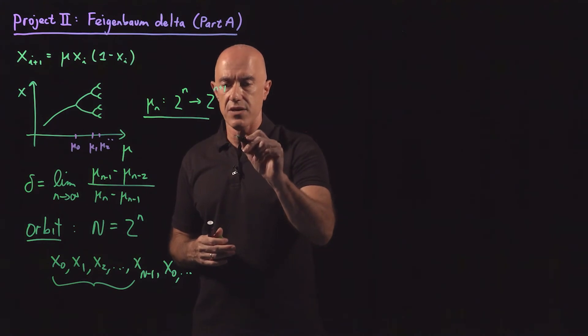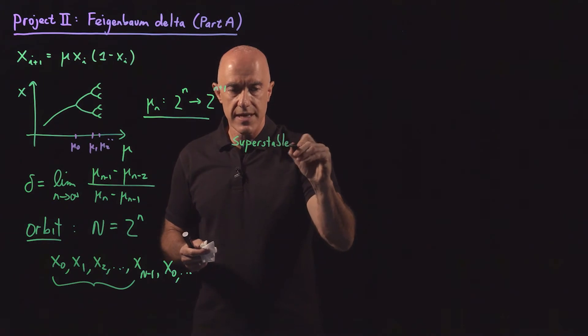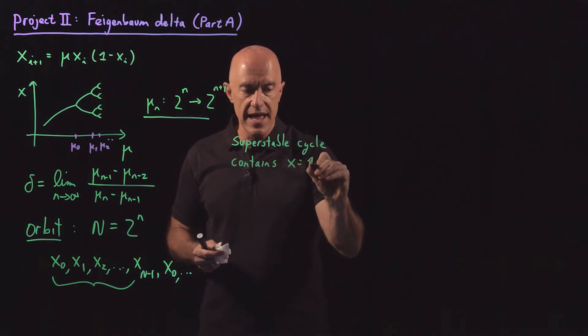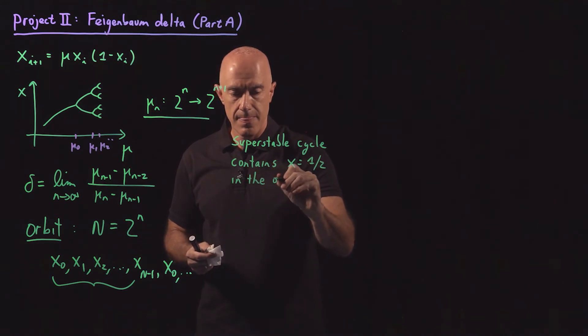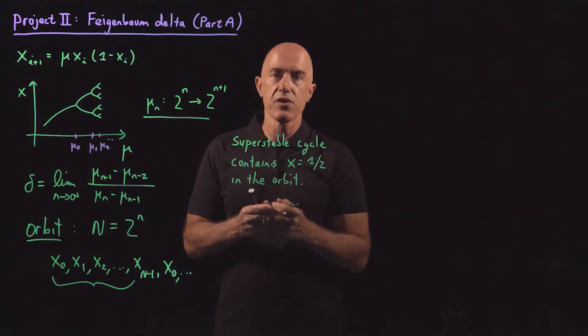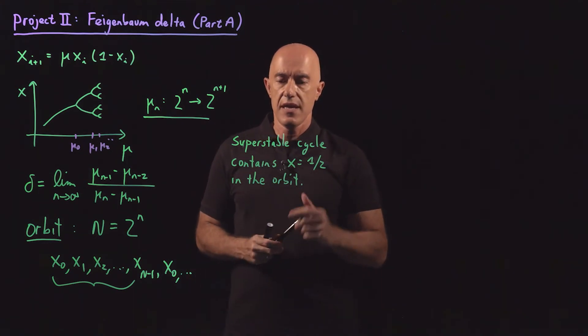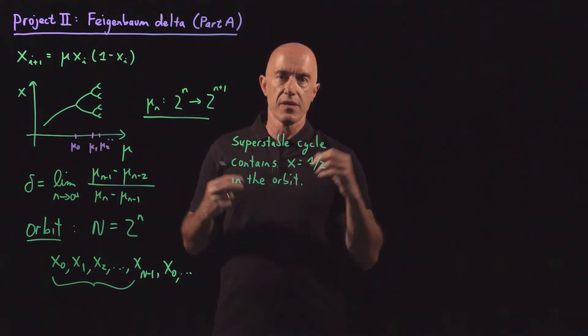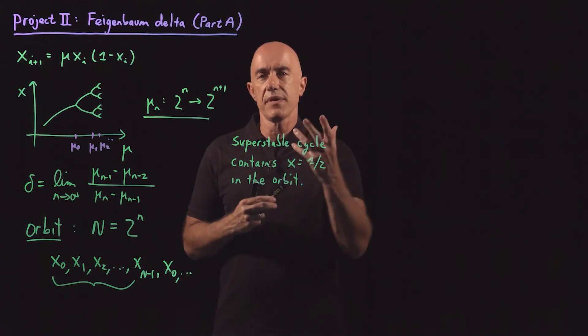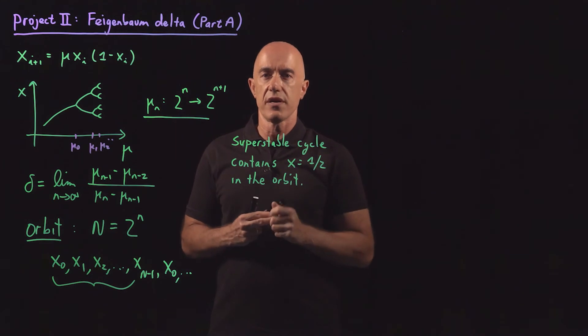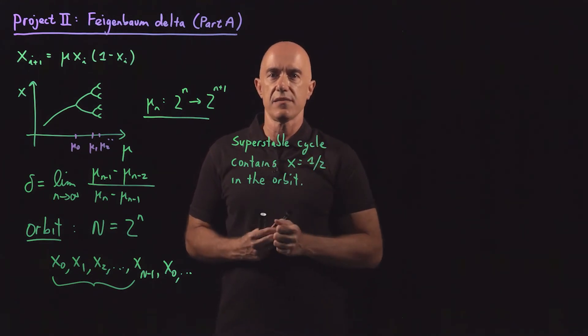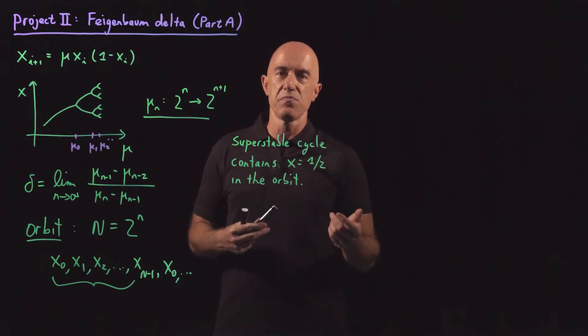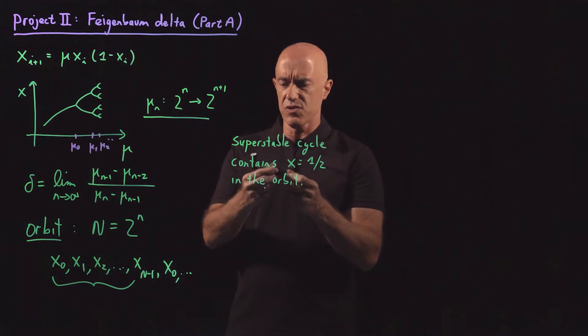So the super stable cycle contains x equals one half in the orbit. So there's a nice theoretical result, which we won't go into here, that for the super stable cycle, when one half is in the orbit, the convergence to the cycle is as fast as possible. So that means the transient behavior is very short. You need very few iterations to get past the transient behavior. That will be super useful, because the computation will be so much faster.